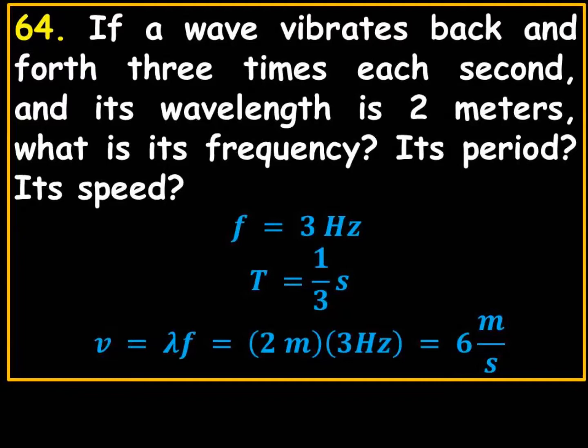What are the SI units for period? Well, seconds, so it would be one-third second. And then the product of wavelength frequency is going to be the velocity, so it would be two times three hertz, which will be six meters per second.